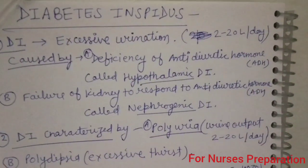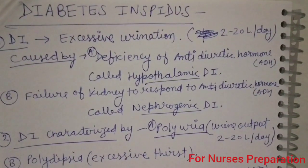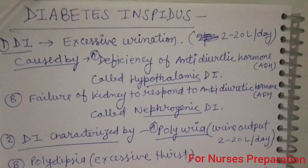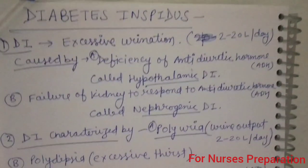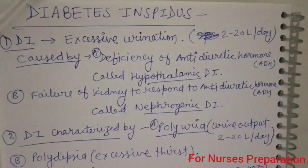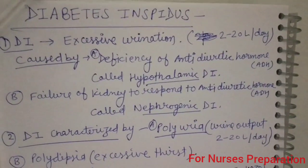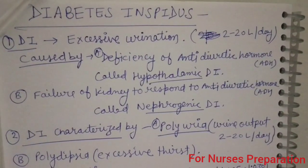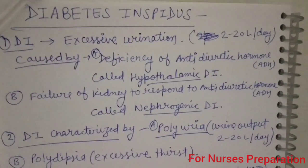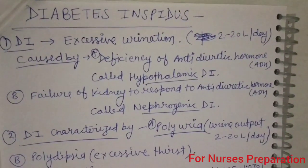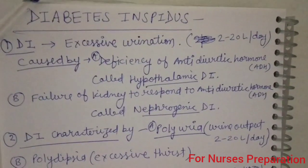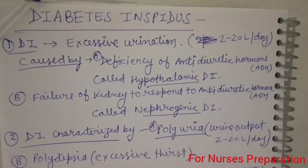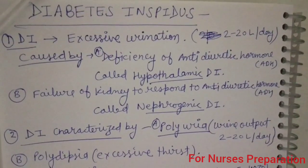So hypothalamic diabetes insipidus is a condition in which anti-diuretic hormone is less, and nephrogenic diabetes insipidus is a condition in which anti-diuretic hormone is sufficiently produced but kidneys are not able to respond according to the hormone. In both these cases, the person is having excess urine output.